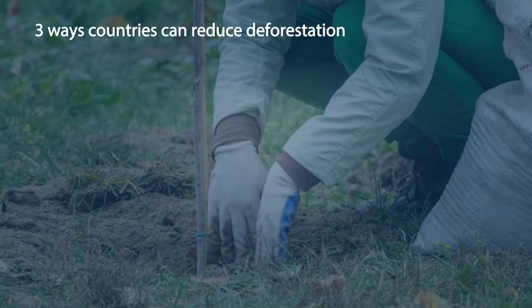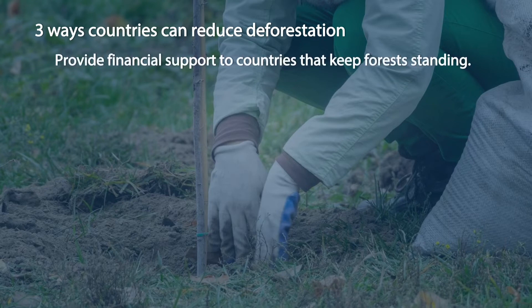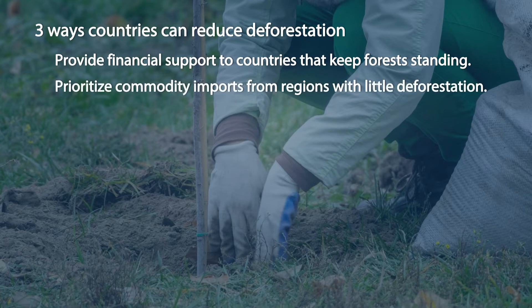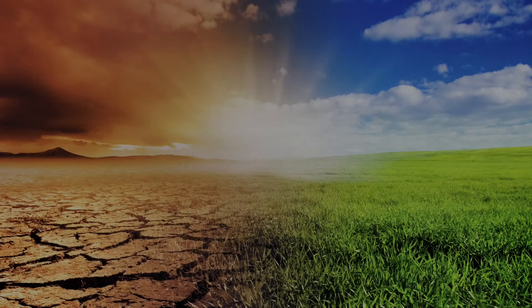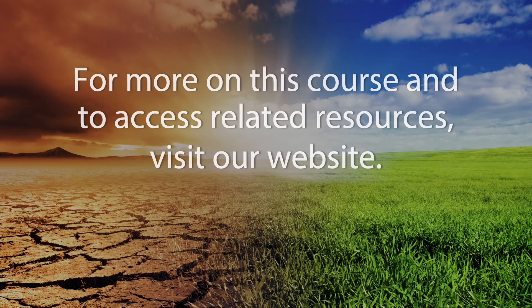Here are three things these countries can do to help reduce deforestation: provide financial support to countries that keep forests standing; prioritize commodity imports from regions with little deforestation; set a good example by cutting their own emissions from fossil fuels. For more on this course and to access related resources, visit our website.